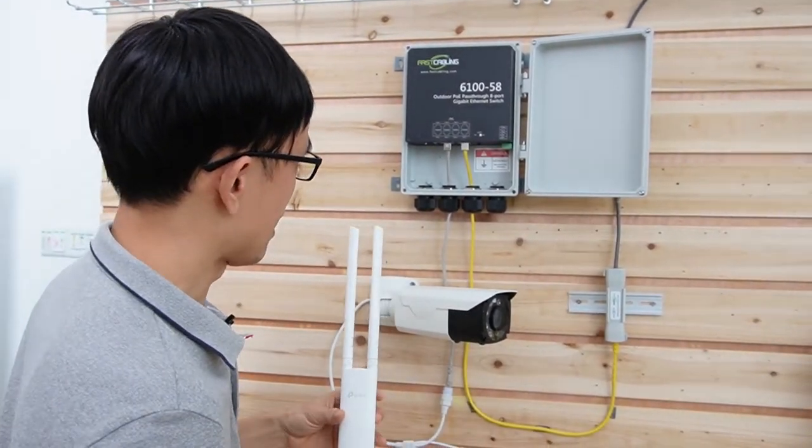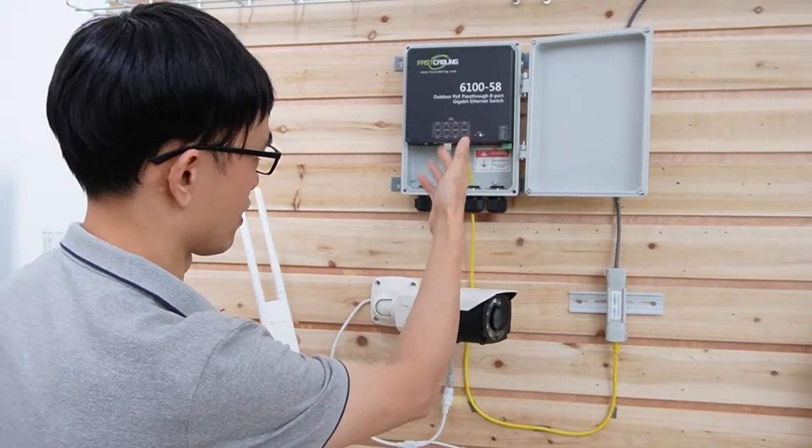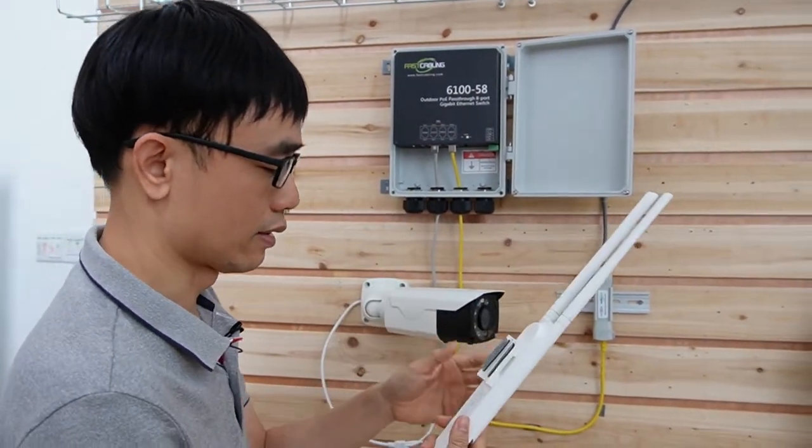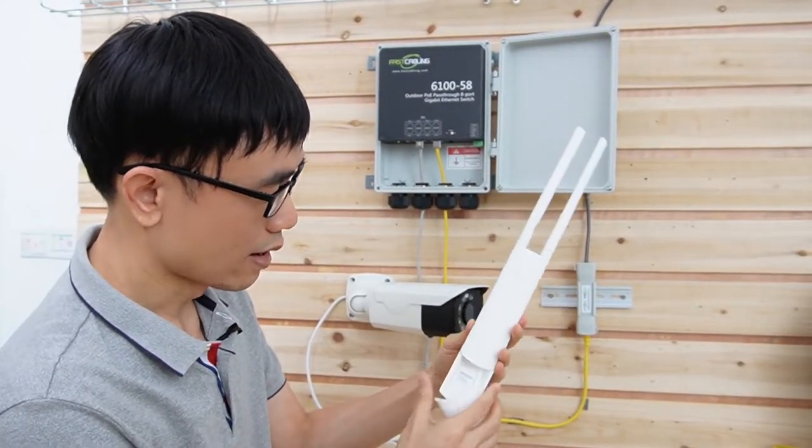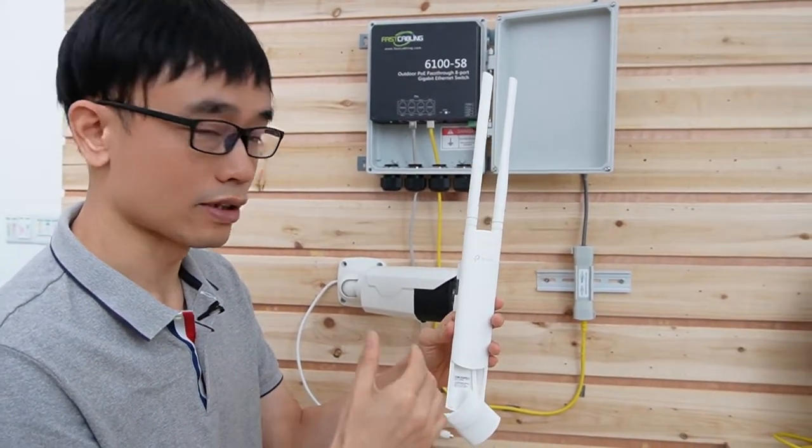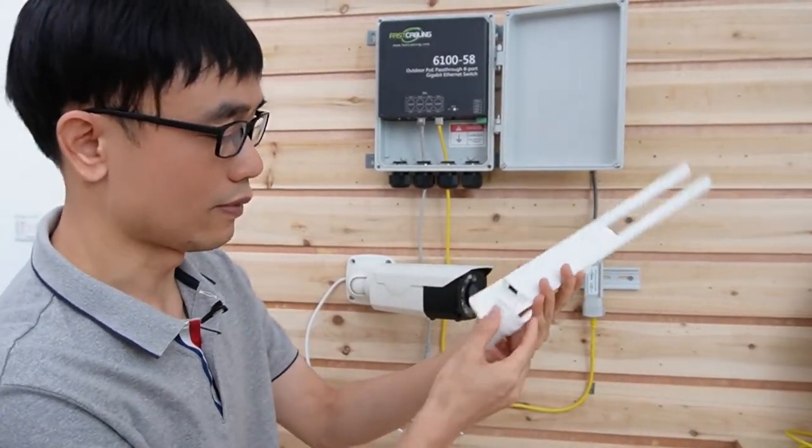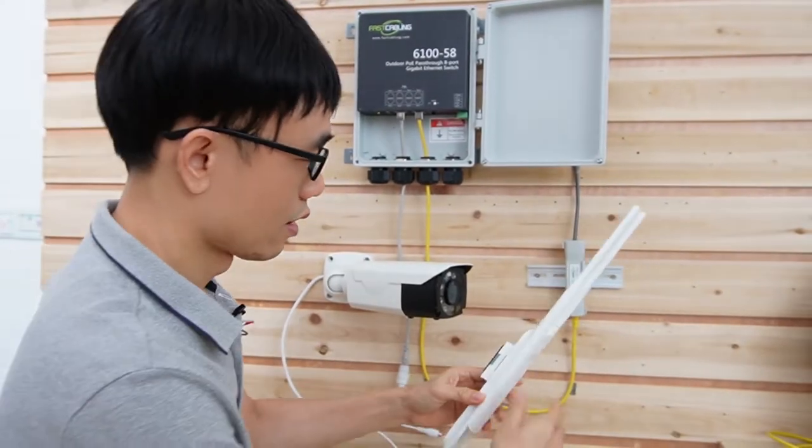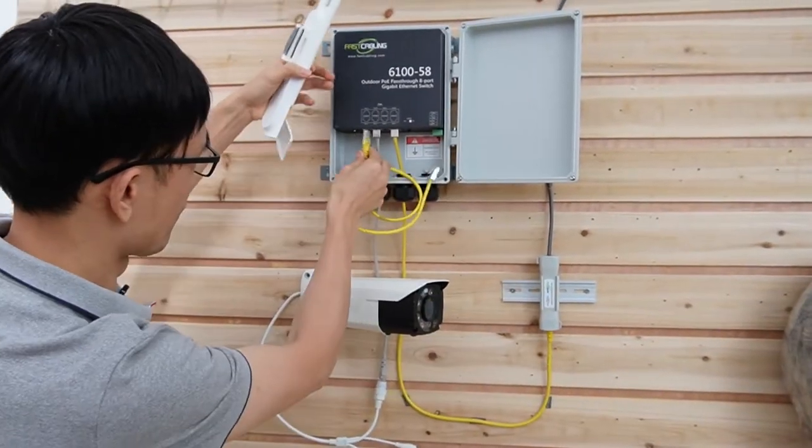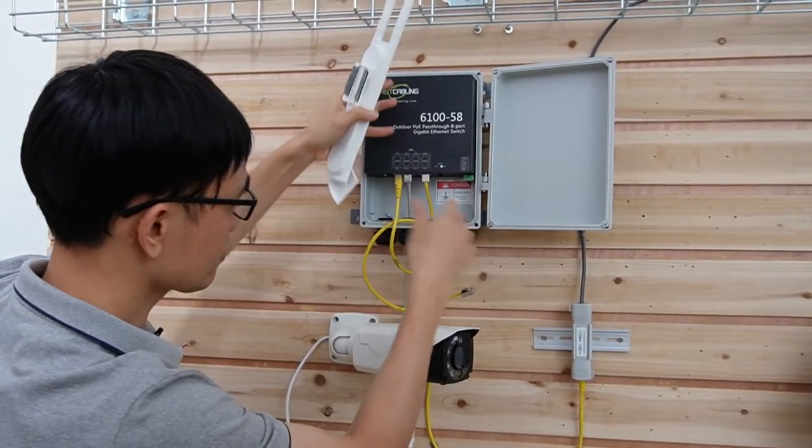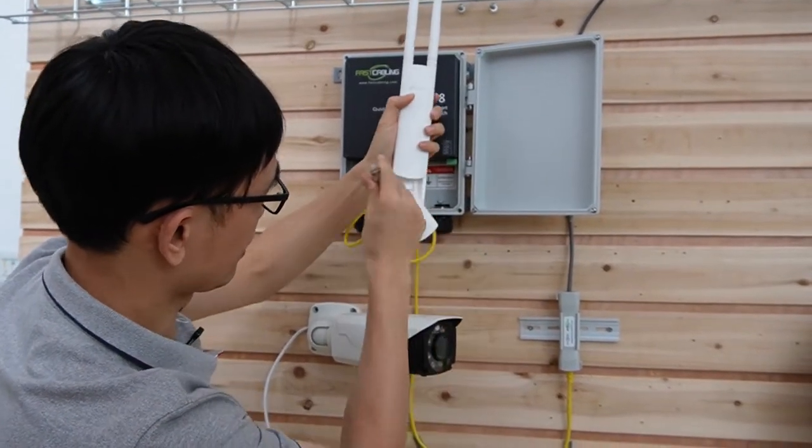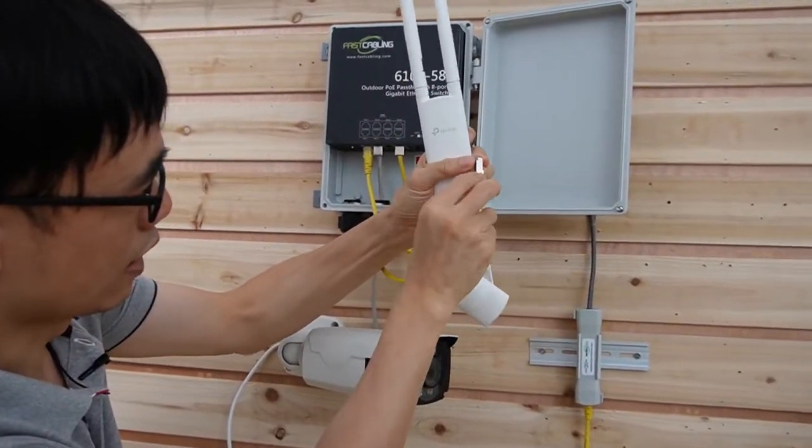The next thing is I just need to pick one of the PoE ports and connect to this wireless access point. Because this wireless access point also supports PoE, there's no need for an external power source. All right, let me just pick one of the PoE ports and connect the cable to the access point.